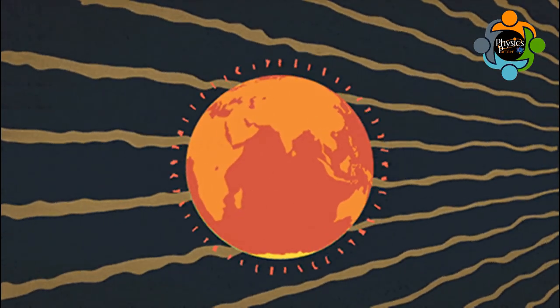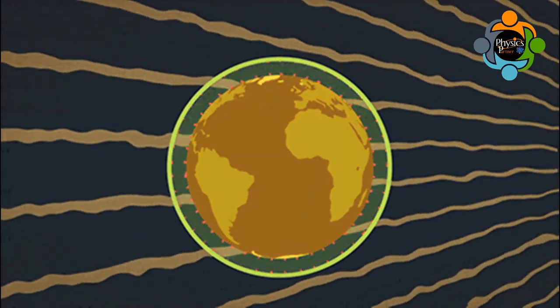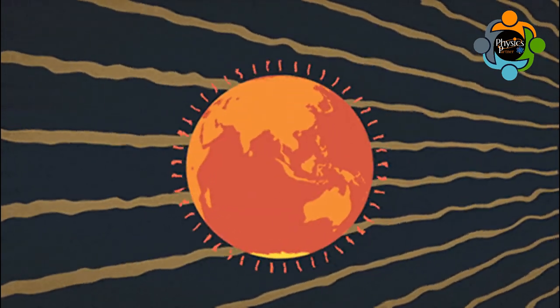Bremsstrahlung is one of the processes by which cosmic rays dissipate some of their energy in the Earth's atmosphere.